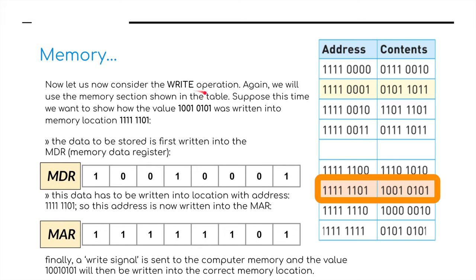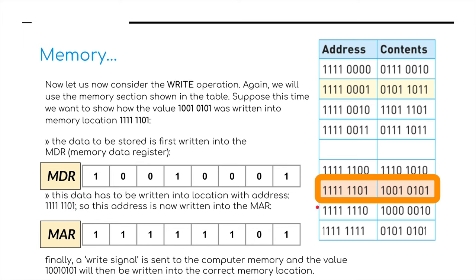Now let's consider the write operation, using the memory section shown in the table. The data to be stored is first written into the MDR — the memory data register. So we put the content and address from RAM into the MDR on the CPU. This data is to be written into a specific location address, so this address is then written into the MAR. Finally, a write signal is sent to the computer memory and the value will be written into the correct memory location. That is RAM talking to the two registers, the MDR and the MAR on the CPU.